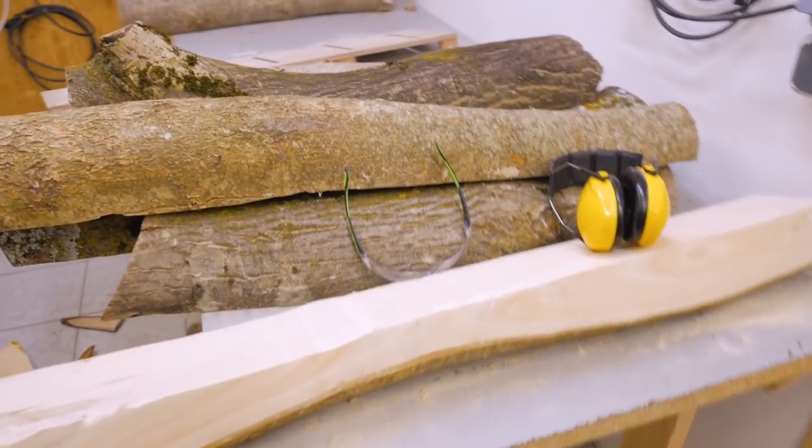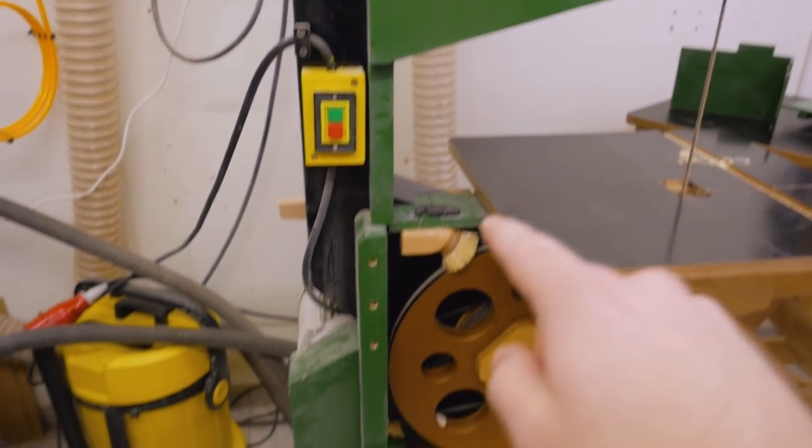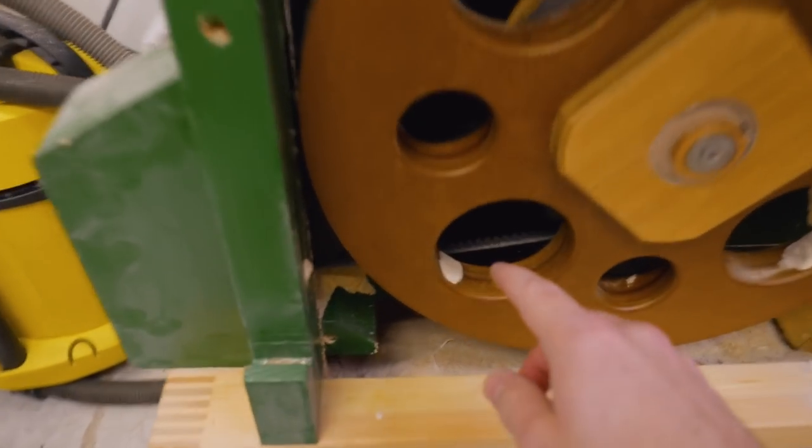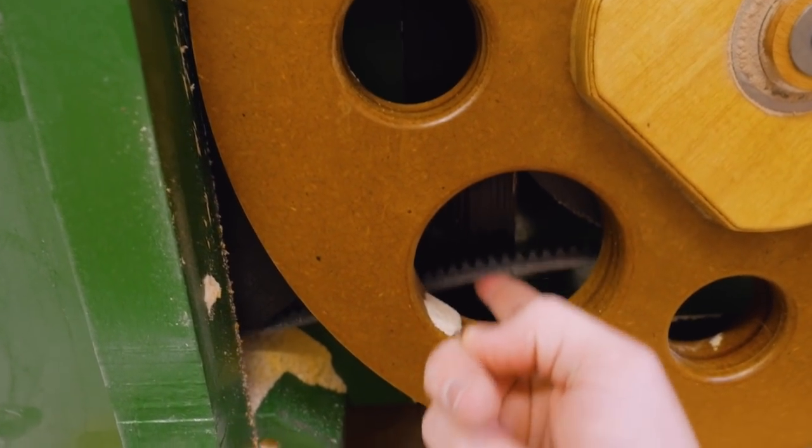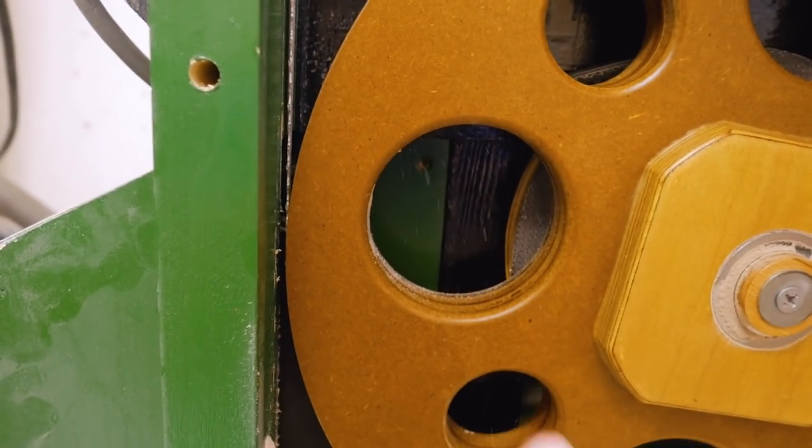During the last cuts I noticed that the bandsaw started to slow down a little bit during the cut which is strange because the motor is powerful enough for these cuts. So I checked and of course the belt is a little bit too slack so re-tightening that should solve this problem.